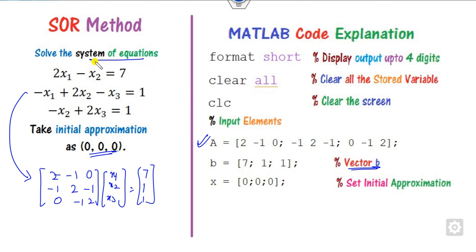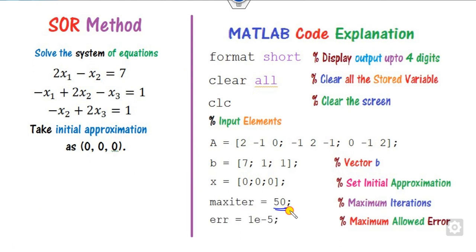If you have another problem, simply replace A, B, and X — the rest of the code remains the same. Set the maximum number of iterations, say 50 (you may increase to 150 depending on your choice), and set the maximum allowed error as 10 to the power minus 5.